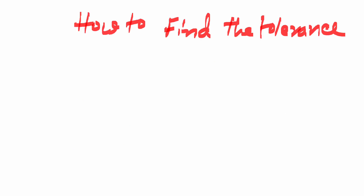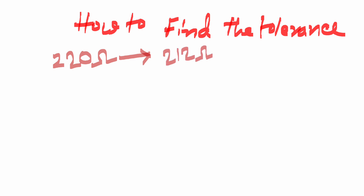Now we are going to see how to find the tolerance. Suppose you have a resistor whose marked value is 220 ohm, but you find the value on a multimeter which is 212 ohm. In that case, what is the tolerance? To find the tolerance, the formula is: tolerance equals error divided by marked value times 100.